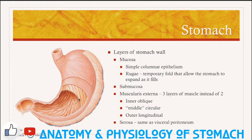The stomach wall has the same four layers as the rest of the digestive tract. The innermost layer is the mucosa, and it is made up of simple columnar epithelium. There are folds in this mucosa called rugae, which are temporary, and as the stomach fills, they flatten out. You can see these ridges here — these are the rugae on the inside of the stomach.